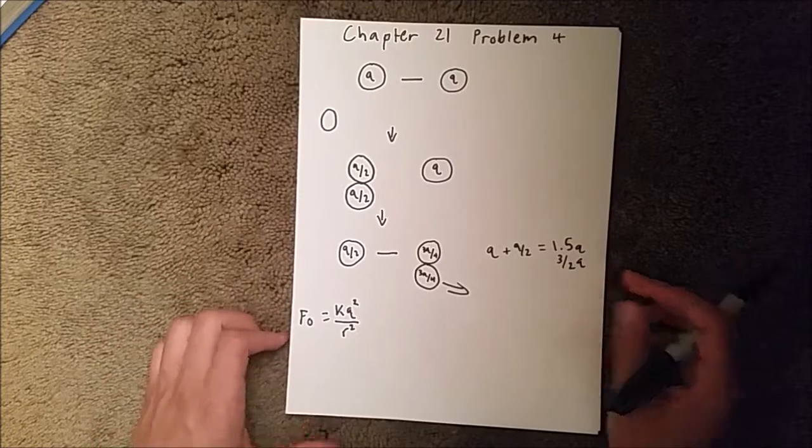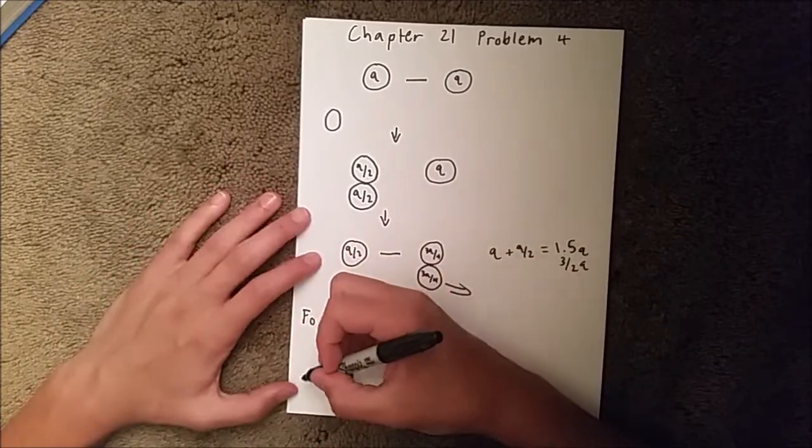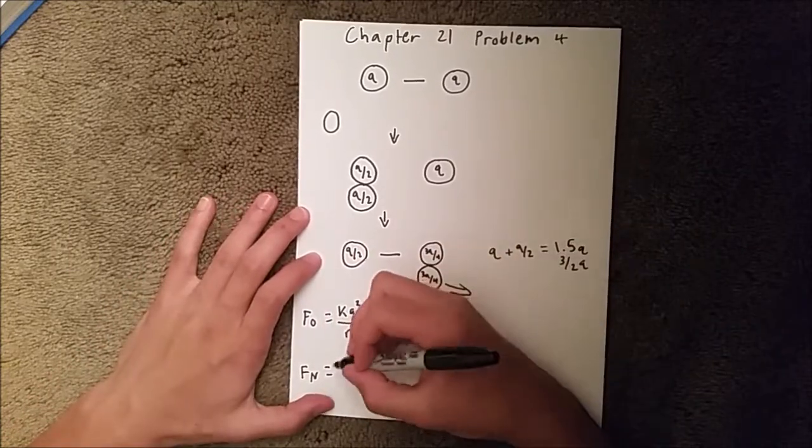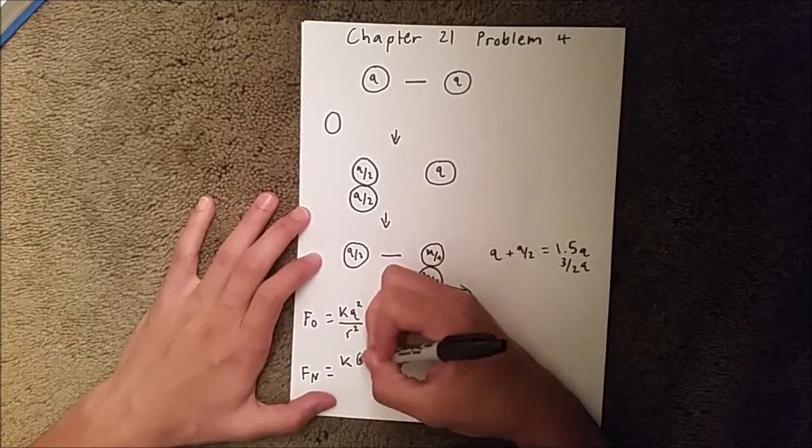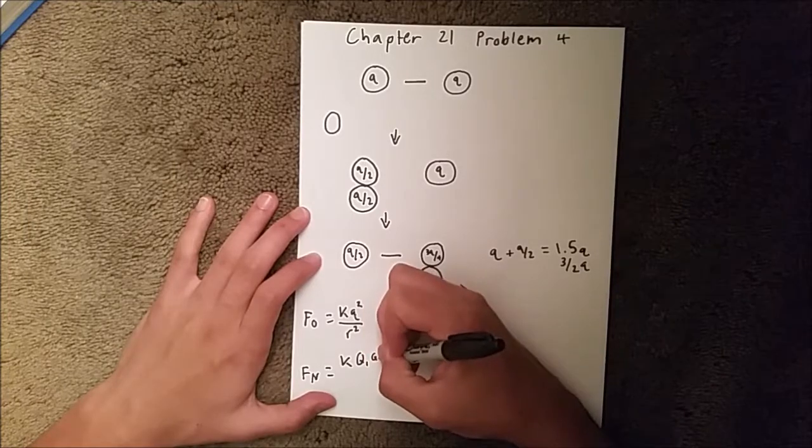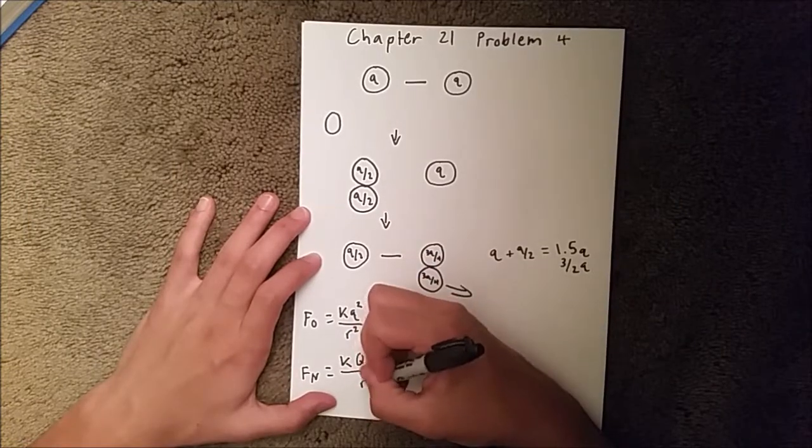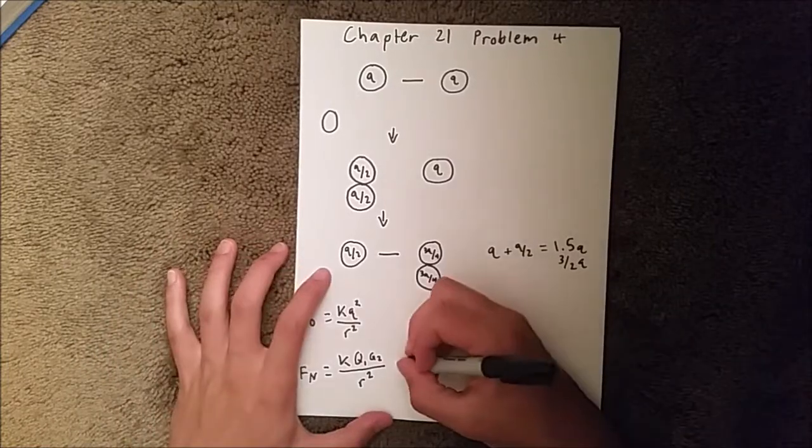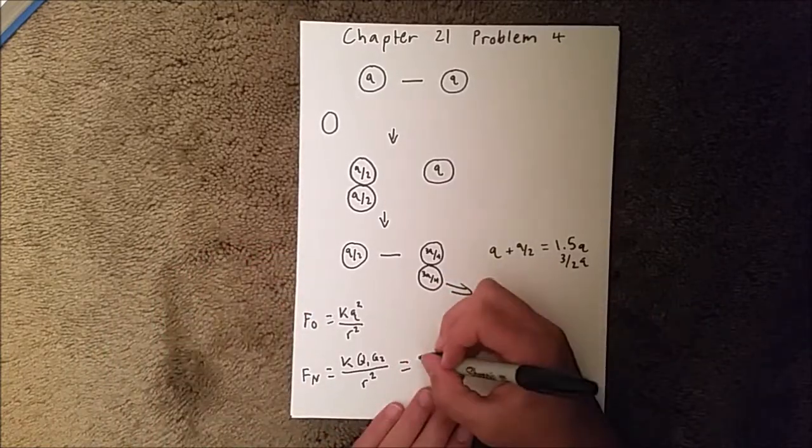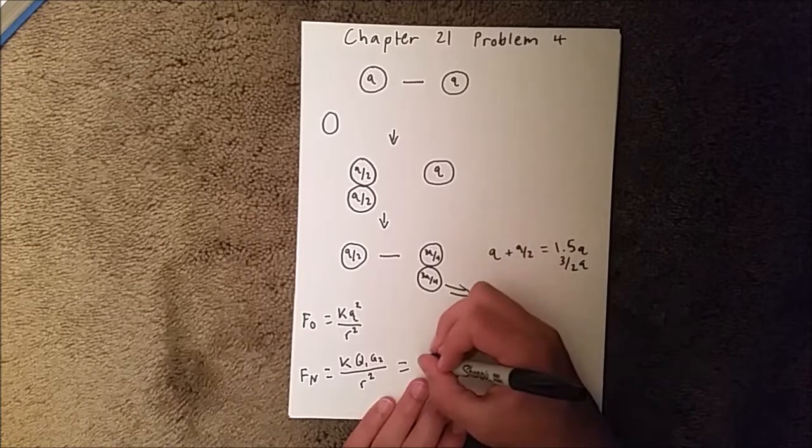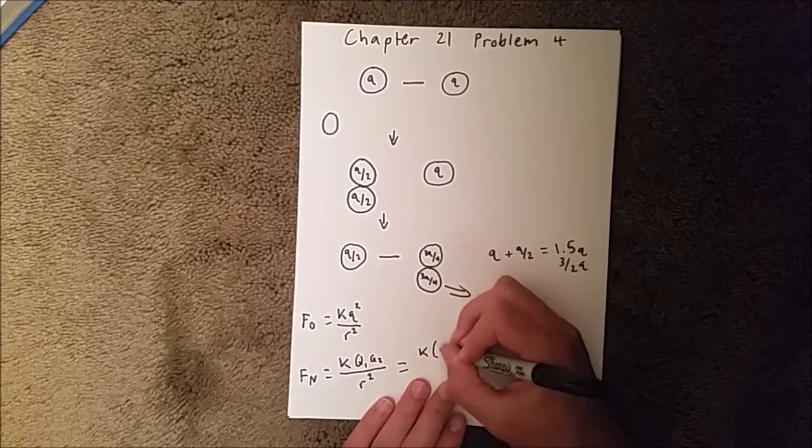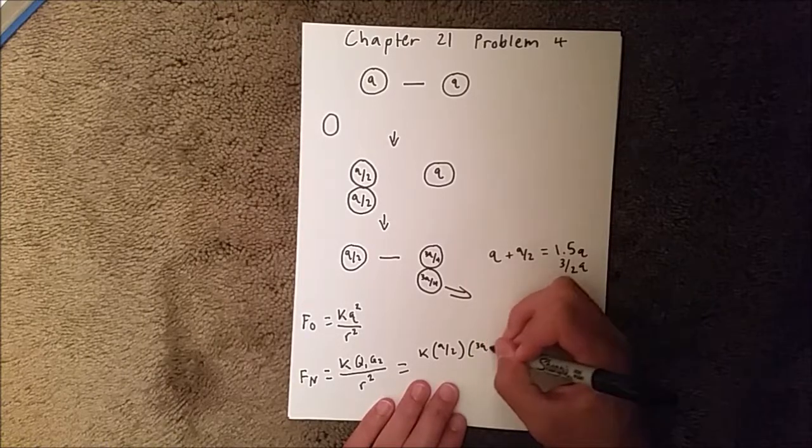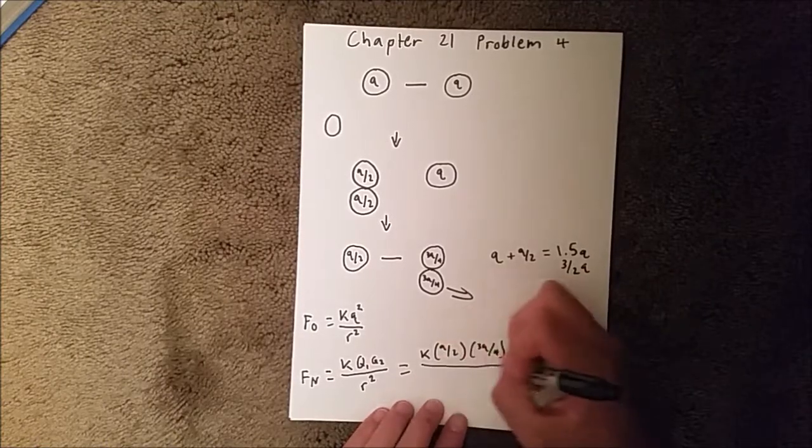That's our original force. But then our new force, we'll say F_N for new, is also going to be K Q₁ Q₂ over R squared. We can plug values in and say K times Q over 2 times 3Q over 4 over R squared.